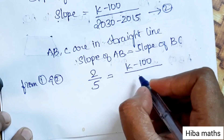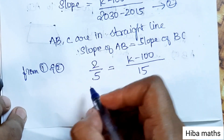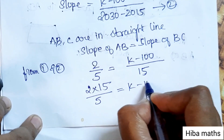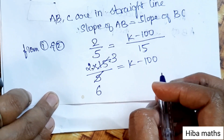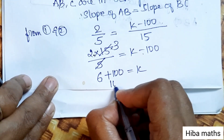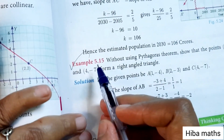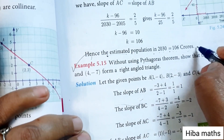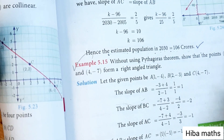Cross-multiplying: 2 × 15 / 5 = k - 100. That gives 6 = k - 100, so k = 100 + 6 = 106. Hence the estimated population in 2030 is equal to 106 crores. Thank you so much for watching.